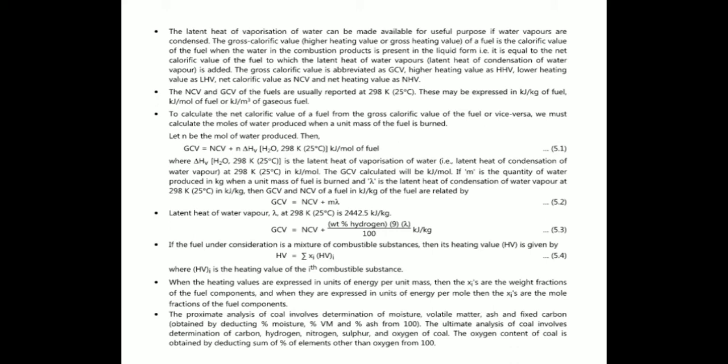To calculate NCV from GCV, we must calculate the moles of water produced when a unit mass of fuel is burnt. The relation is: GCV = NCV + N·ΔHv, where N is the moles of water produced and ΔHv is the latent heat of vaporization of water in kJ/mol. In kJ/kg terms: GCV = NCV + M·λ, where M is the mass of water produced per unit mass of fuel and λ is the latent heat of condensation at 298 K.